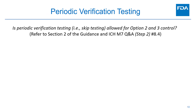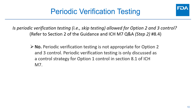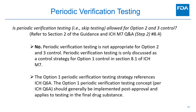Is periodic verification testing (i.e., skip testing) allowed for Option II and Option III control? No. Periodic verification testing is not appropriate for Option II and Option III control. Periodic verification testing is only discussed as a control strategy for Option I control in Section 8.1 of ICH M7. The Option I periodic verification testing strategy references ICH Q6A, and this concept should generally be implemented post-approval and applies to testing in the final drug substance.